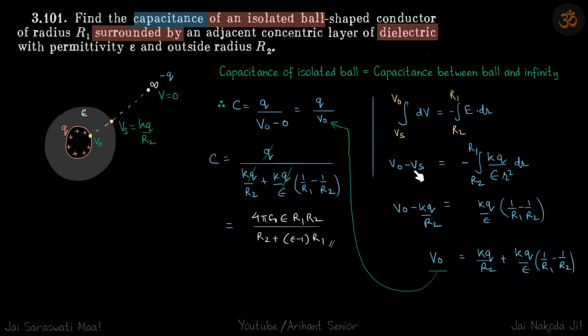This is V0 minus Vs, and Vs is KQ by R2. Here E is KQ by Epsilon R2, because inside dielectric the electric field decreases by factor of Epsilon.